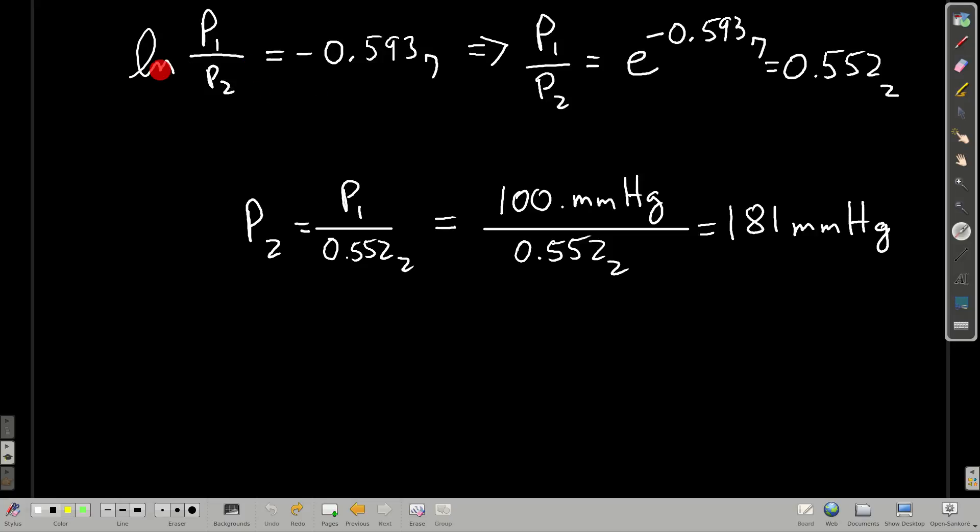All we do now is take e to both sides. So e is the inverse of the natural log. We get P1 over P2 equals e to the negative 0.594. And that number, if you put it in your calculator, is 0.552. So rearranging this, multiplying through by P2 divided by 0.552, we get P2 equals this, plugging in P1. And we find that P2 is 181 millimeters of mercury.